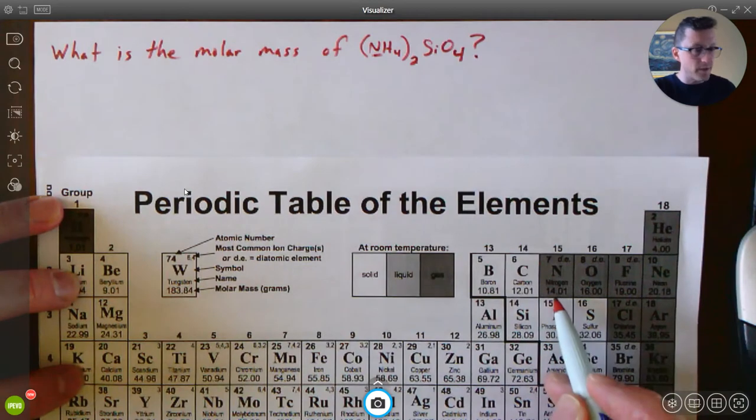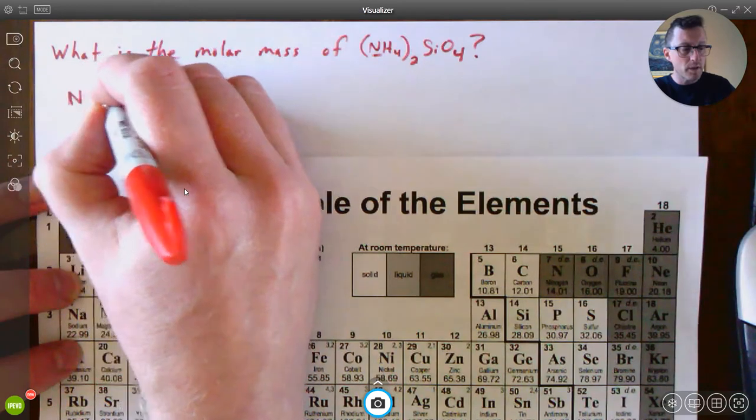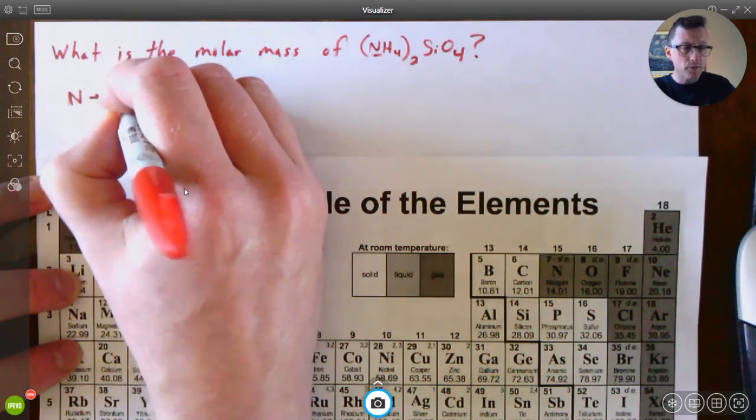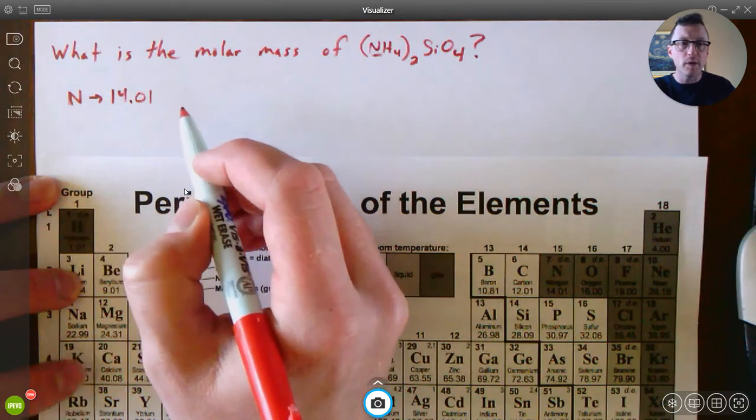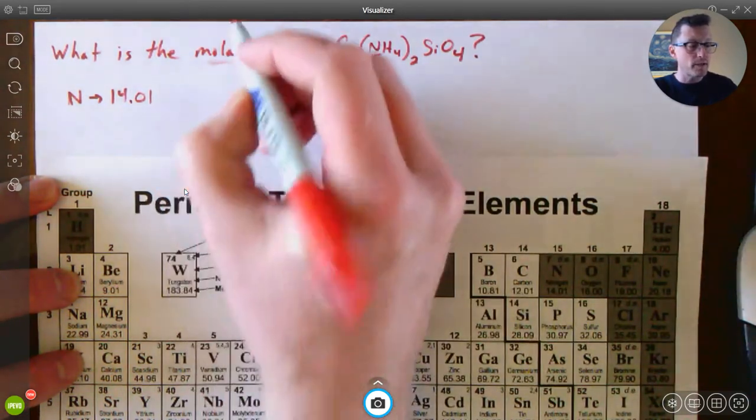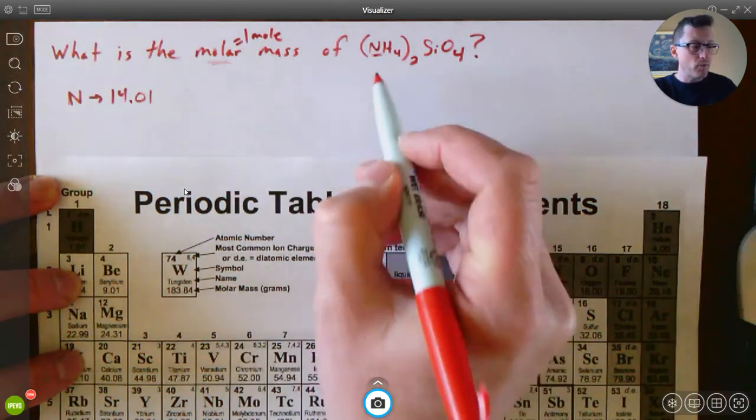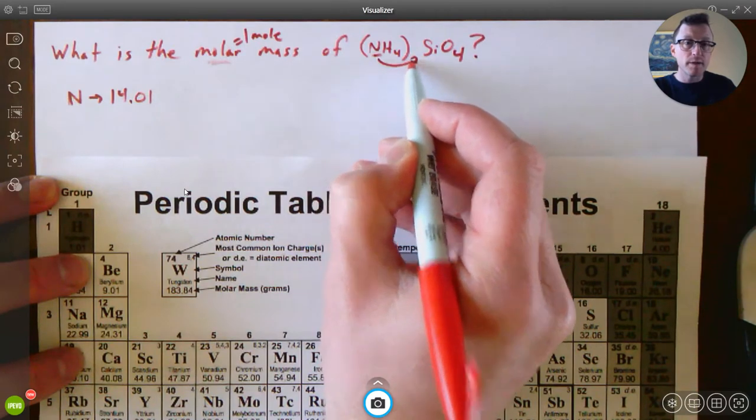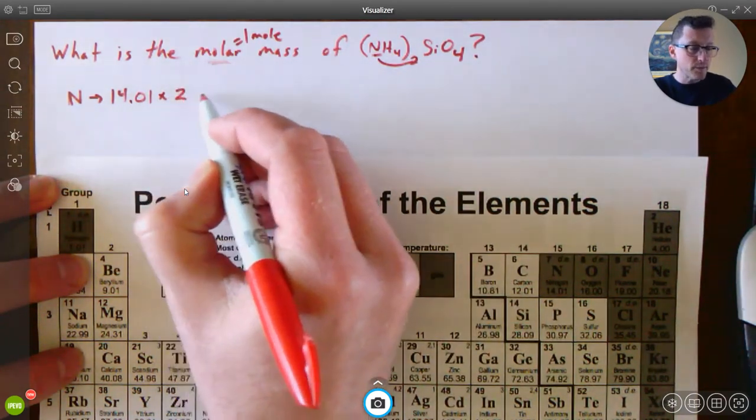So I look at the periodic table and find N, and it has 14.01 grams per one mole. Well, how many of these do I have? If I had one mole - a molar mass means I have one mole - how many moles of N do I have? Well, it's one times two, so I'm going to put in times two here, and that gives me 28.02.